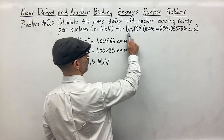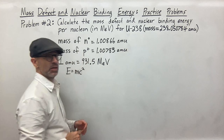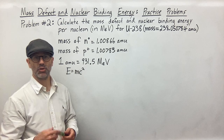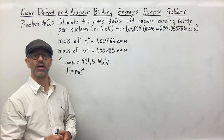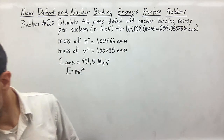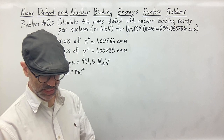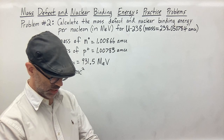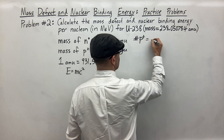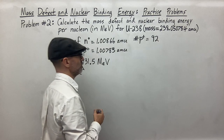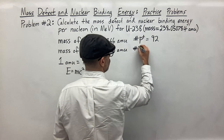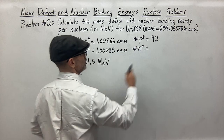We have uranium-238. The mass number tells you the number of protons and neutrons together. We need to figure out what the protons are, subtract that from the mass number, and we'll get the number of neutrons. The atomic number of uranium is 92, so the number of protons is 92. Therefore we subtract 92 from 238 to get the number of neutrons.